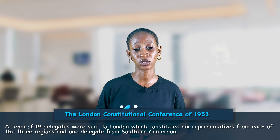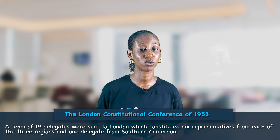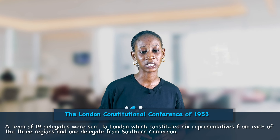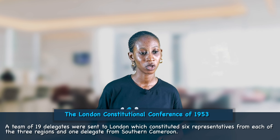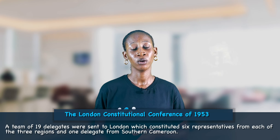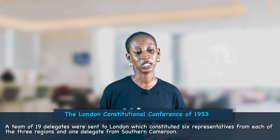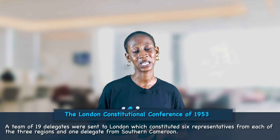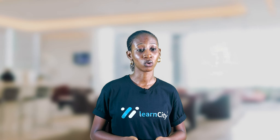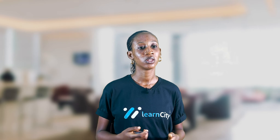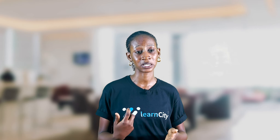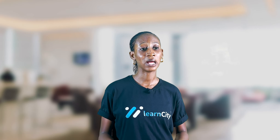A team of 19 delegates were sent to London, consisting of six representatives from each of the three regions — the Northern, Western, and Eastern Region — and one delegate from Southern Cameroon, making 19 delegates in total. The conference was held between the 30th of July and the 22nd of August 1953.